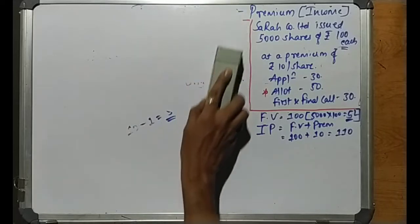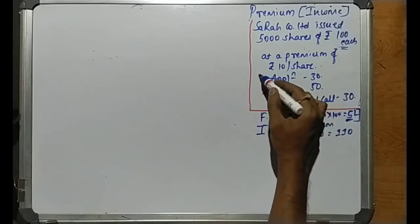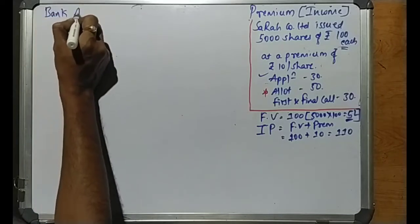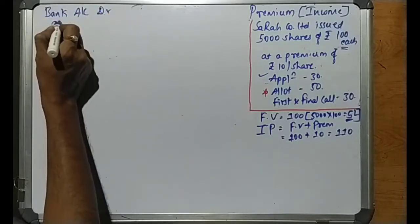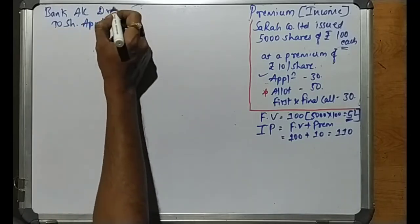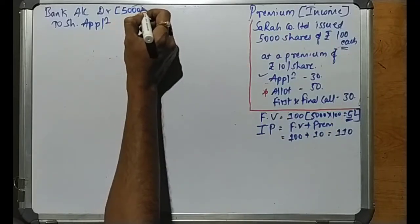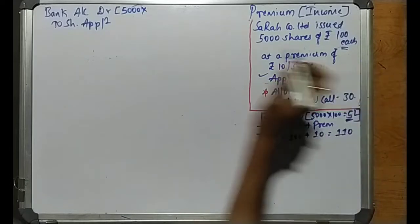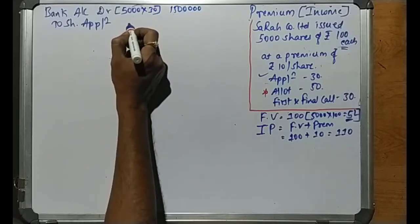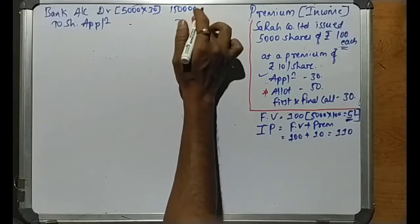The first journal entry is the application stage. It is related to receipt of application money. The entry is: Bank Account debit to Share Application Account. 5,000 shares at rupees 30 on application gives a total amount of rupees 1,50,000. Bank Account Dr 1,50,000; to Share Application Account 1,50,000.